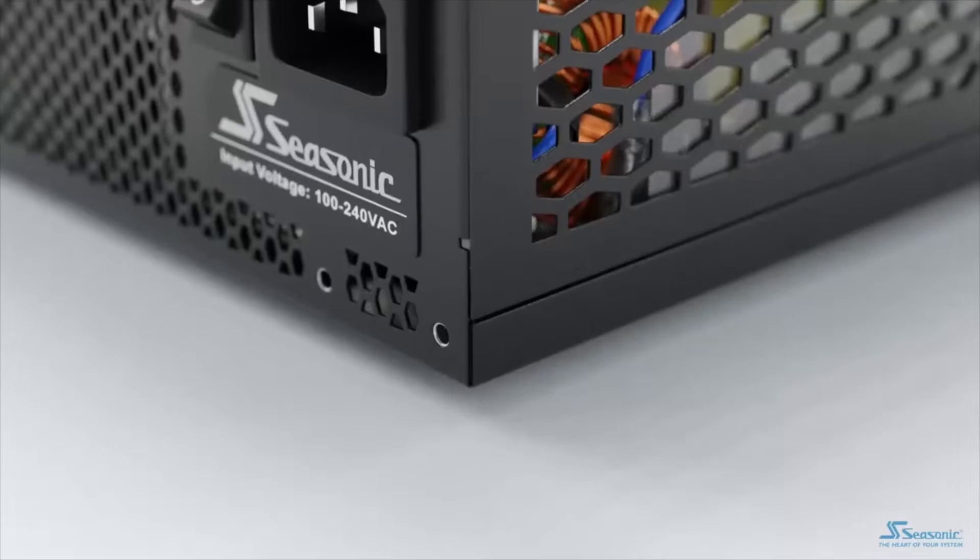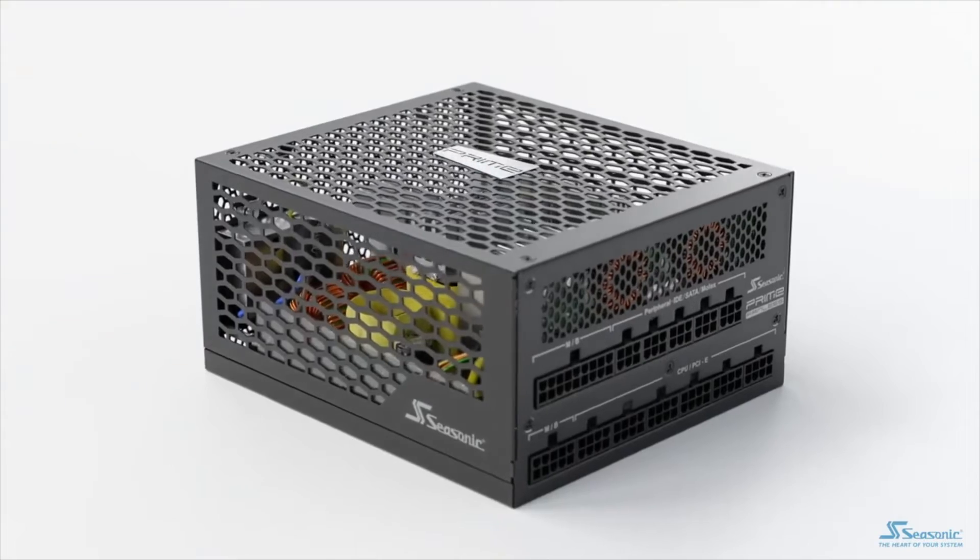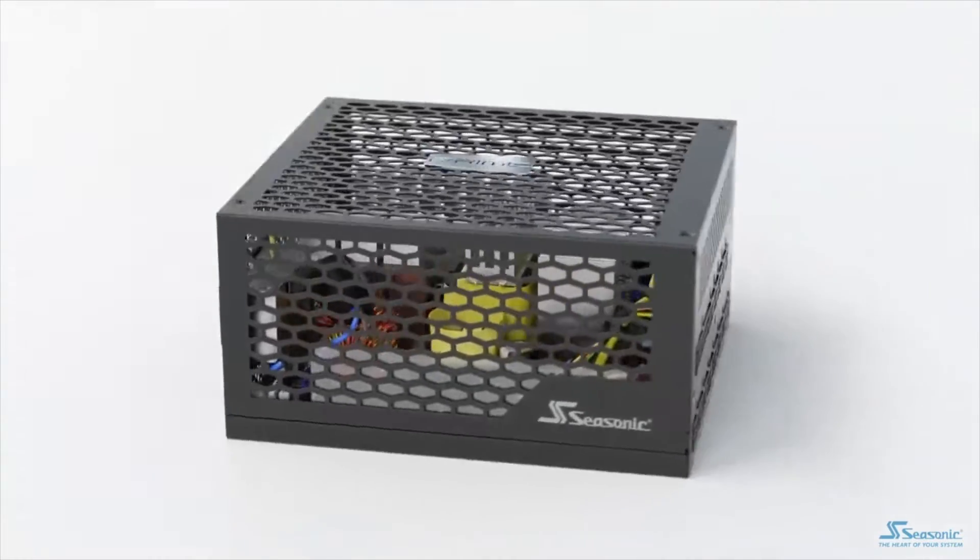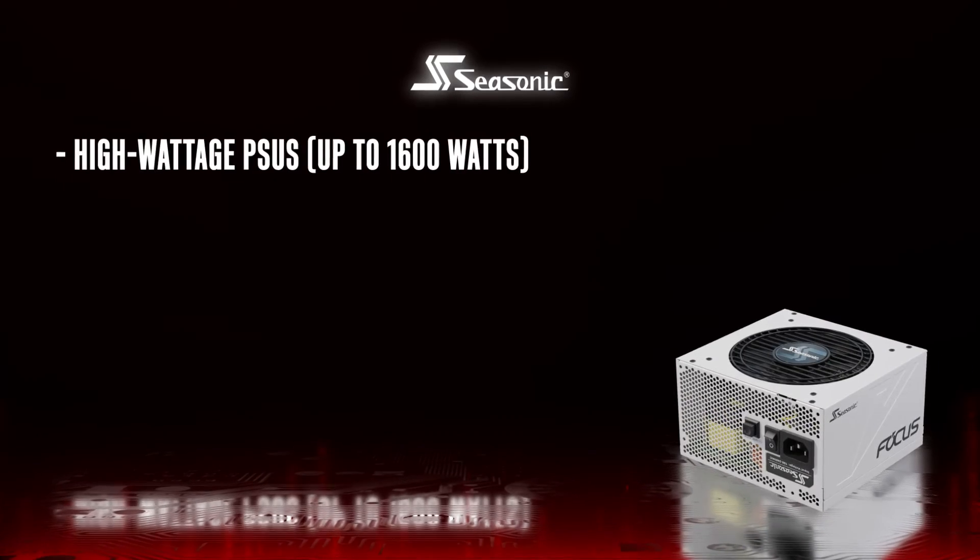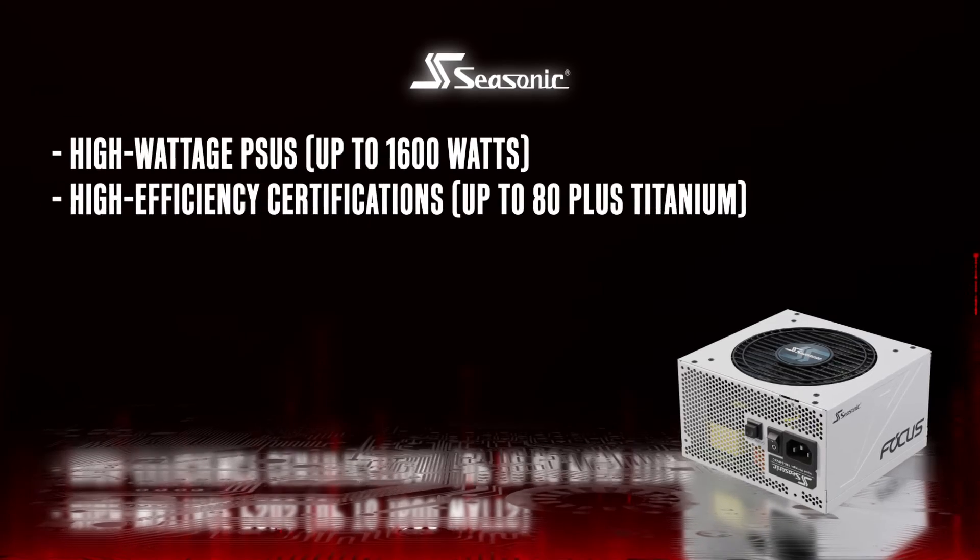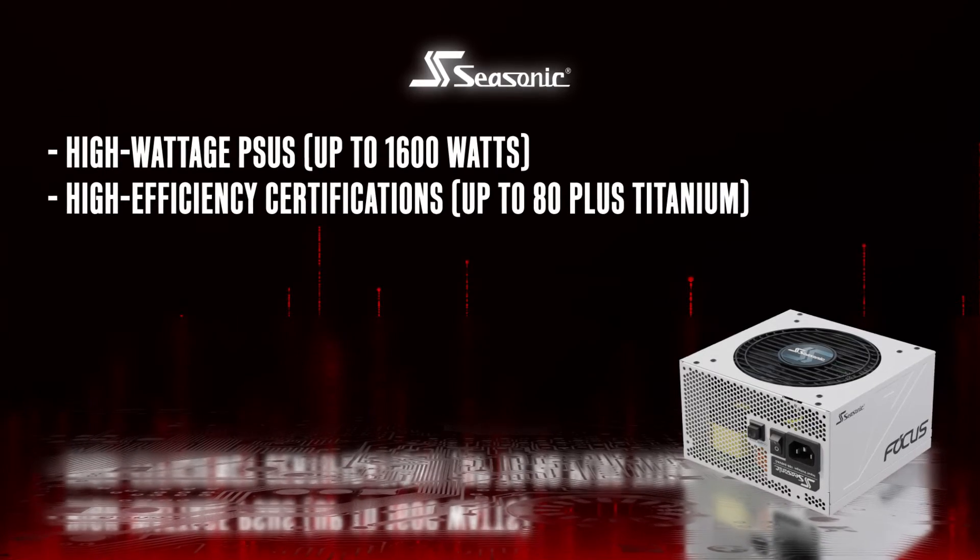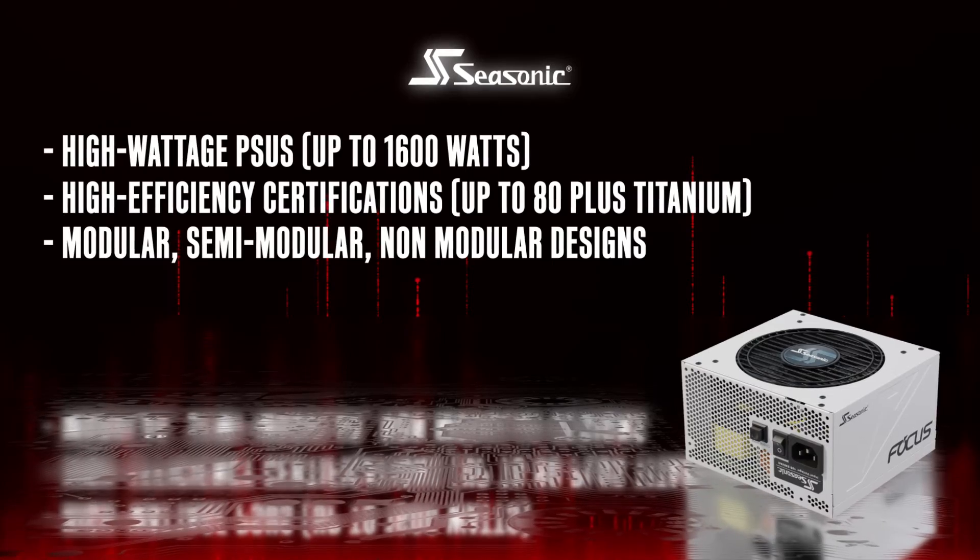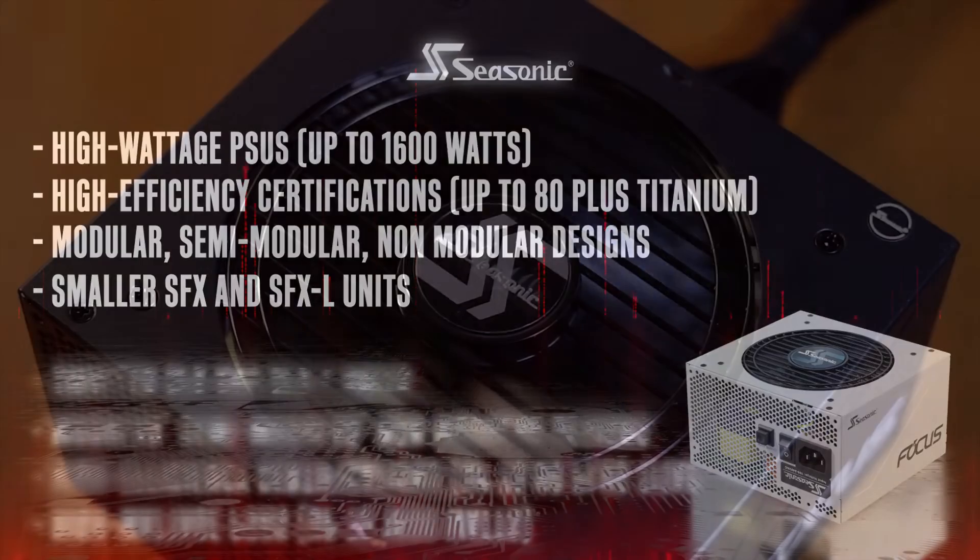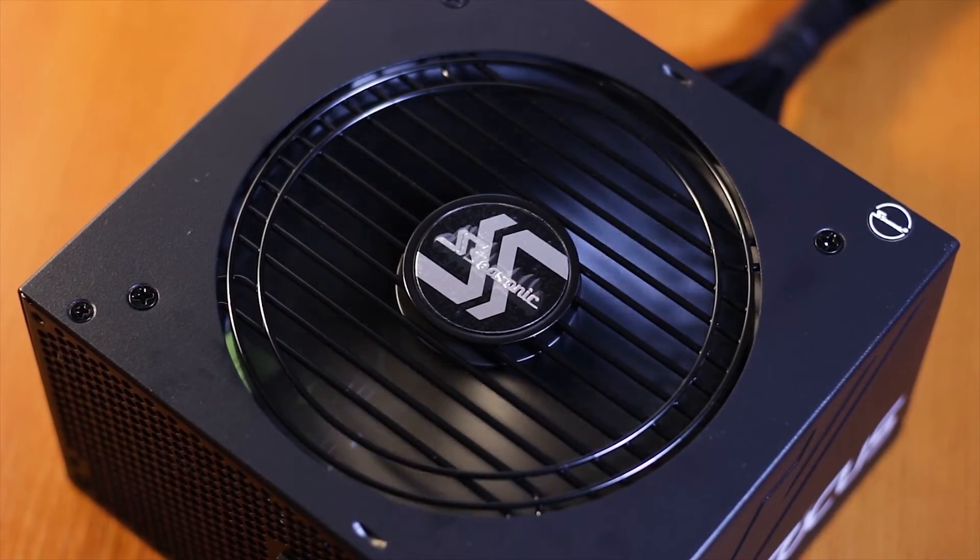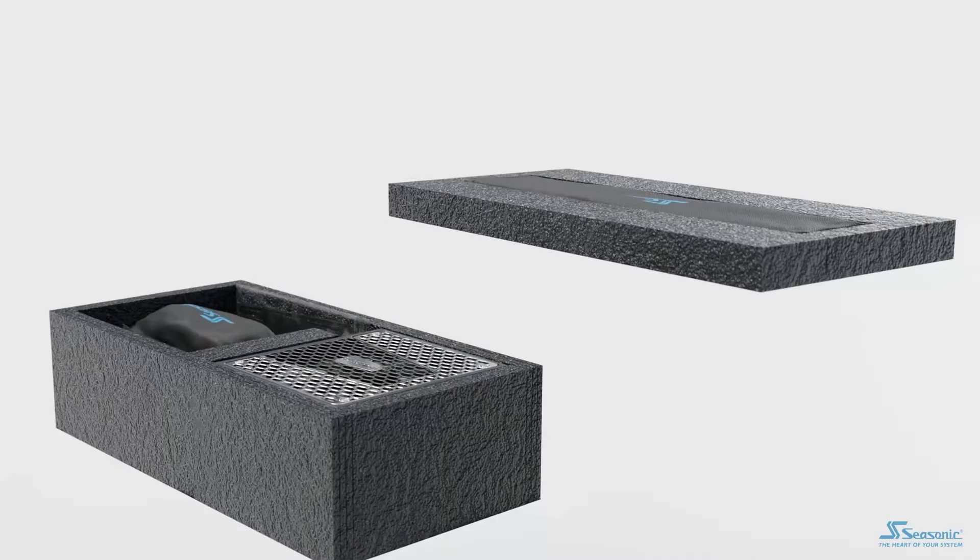Since they're selling the majority of PSUs for other brands, their selection is a bit limited. They're currently offering around 35 different units, from their 400-watt Eco Plus series all the way up to their premium 1,600-watt Prime series. Their whole lineup includes high-wattage PSUs up to 1,600 watts, high-efficiency certifications up to 80-plus titanium, modular, semi-modular, non-modular designs, and smaller SFX and SFXL units. Similar to Corsair, Seasonic doesn't offer a whole lot of budget-friendly or RGB-illuminated power supplies.